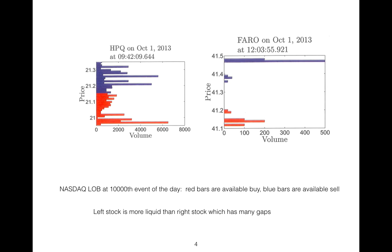Red bars are the available buy, blue bars are available sell. As you see, the left stock is more liquid than the right stock, which has many gaps.